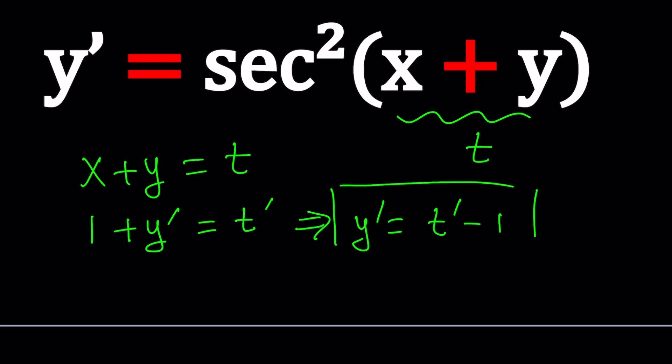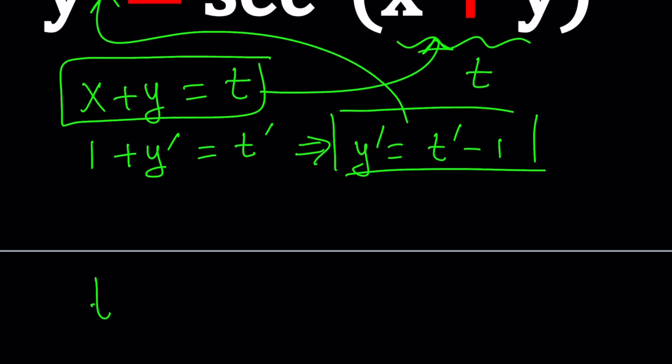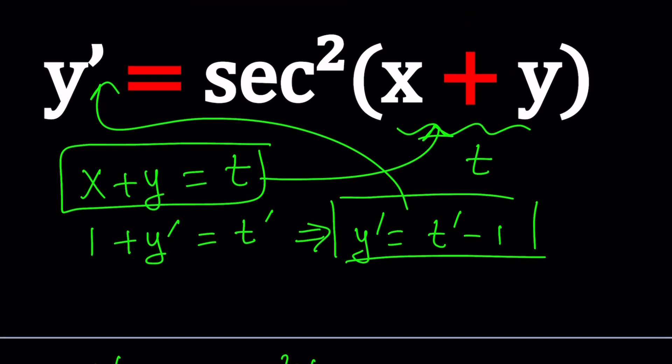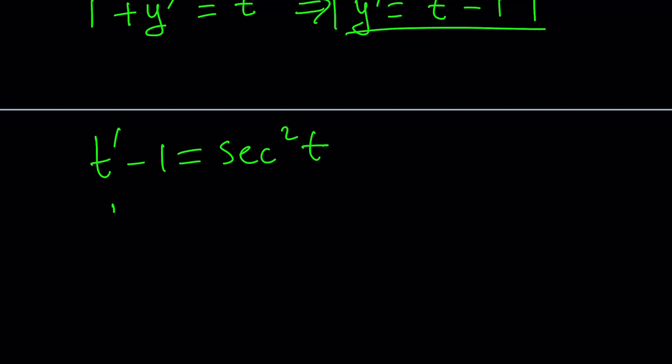Y' can be isolated and written as t' - 1. Let's go ahead and substitute both of these into our equation. We're going to get t' - 1 = sec²t. Notice that replacing x + y with a single variable helps us a lot. Let's go ahead and put the -1 on the right-hand side.